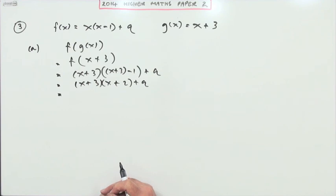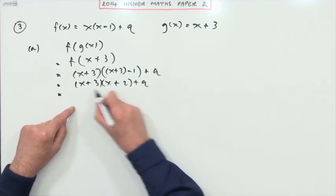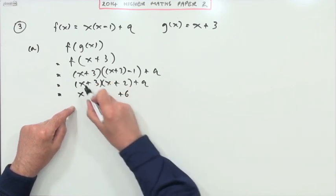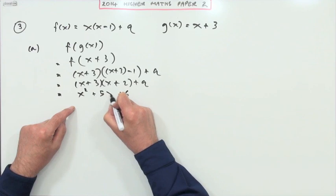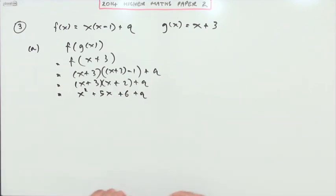Now I would imagine you need to tidy that up. I don't know if that would be sufficient for the first two marks. Maybe it would. I'll just finish it off anyway. So first times the first, last times the last: three x and two x makes it five x plus q. I've got for the answer for the first part.